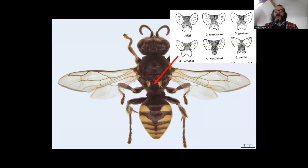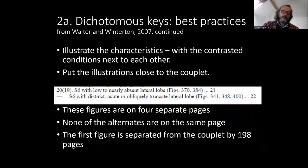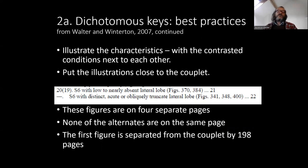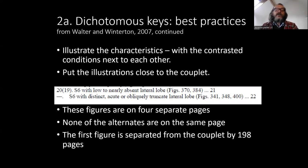The only reason I knew what a mucro was is because there's a group of apoid wasps where you have to know what it looks like to be able to identify them. And I like wasps. Now the best practice: illustrate the characteristics with the contrasted conditions next to each other, and put the illustrations close to the couplet. Here we see S6 with a nearly absent lobe vs. S6 with a distinct acute or obliquely truncate lateral lobe. But the figures are on four separate pages.